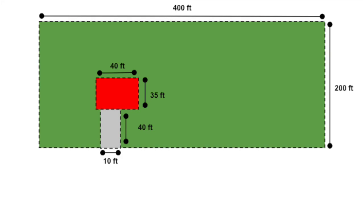So let's take a look at diagram number three. We have a large rectangle that's 400 feet by 200 feet. If we calculate those, we get a grand total of 80,000 square feet. But notice that there's a house and a driveway — you'll need to get those out of there. So why don't you hit pause, take a crack at it, then come on back and we'll see how you did.